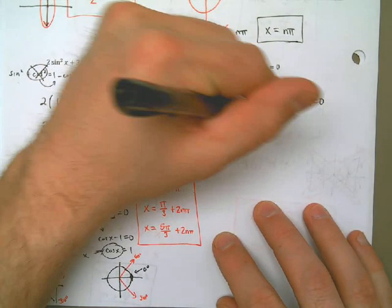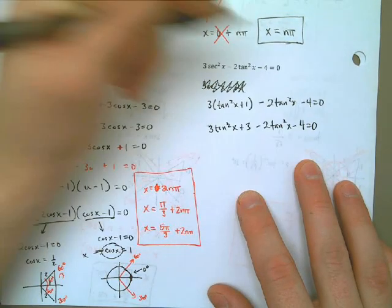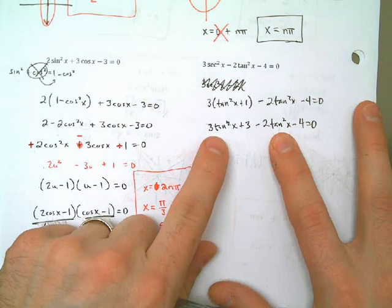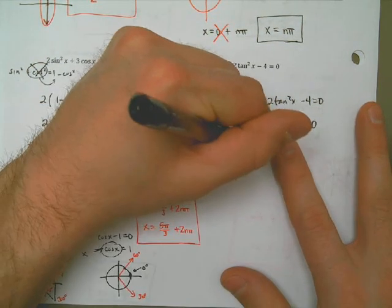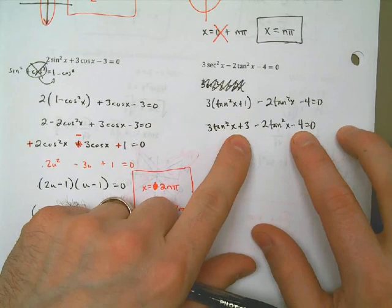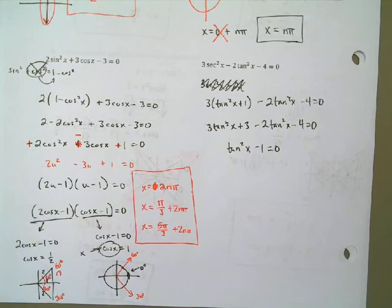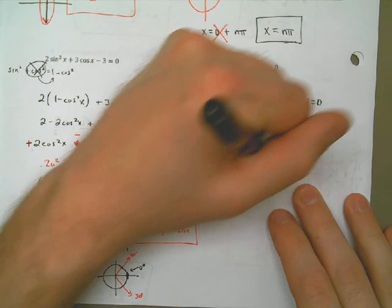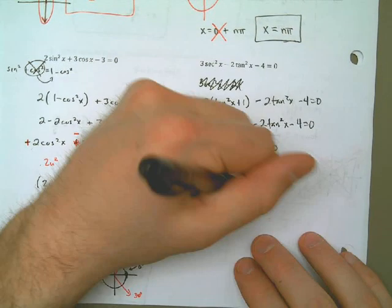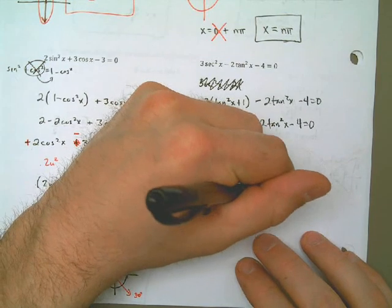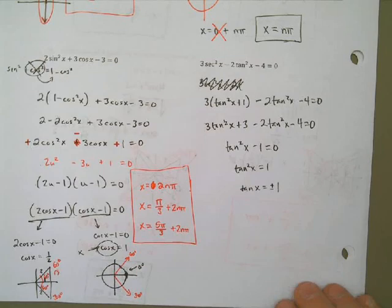Now that I have everything with tangent squared, I can work with this problem. I distribute the 3, then combine my tangent squared terms: 3 squared minus 2 squared gives me 1 tangent squared x remaining. Then 3 minus 4 is minus 1, equal to 0. That means tangent squared x equals 1, which means tangent x must be plus or minus the square root of 1, which is just plus or minus 1.